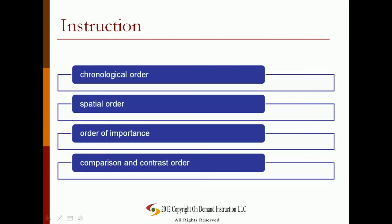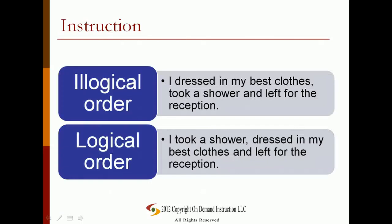Another method of making your sentences clear and smooth involves arranging ideas within your sentences according to logical plans. Some commonly used plans are chronological order, spatial order, order of importance, and comparison and contrast order. Related ideas within a sentence should be rearranged in a logical order. As you read the following examples, notice that a sentence with ideas in an illogical order forces the reader to jump back and forth between unconnected ideas.